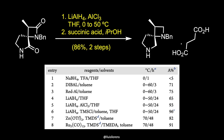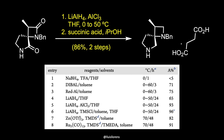The resulting diamine is crystallized as the succinic acid salt in 86% yield. A nucleophilic aromatic substitution reaction with chloropyrrolopyrimidine followed by a reductive debenzylation provides the amine in 92% yield over two steps.